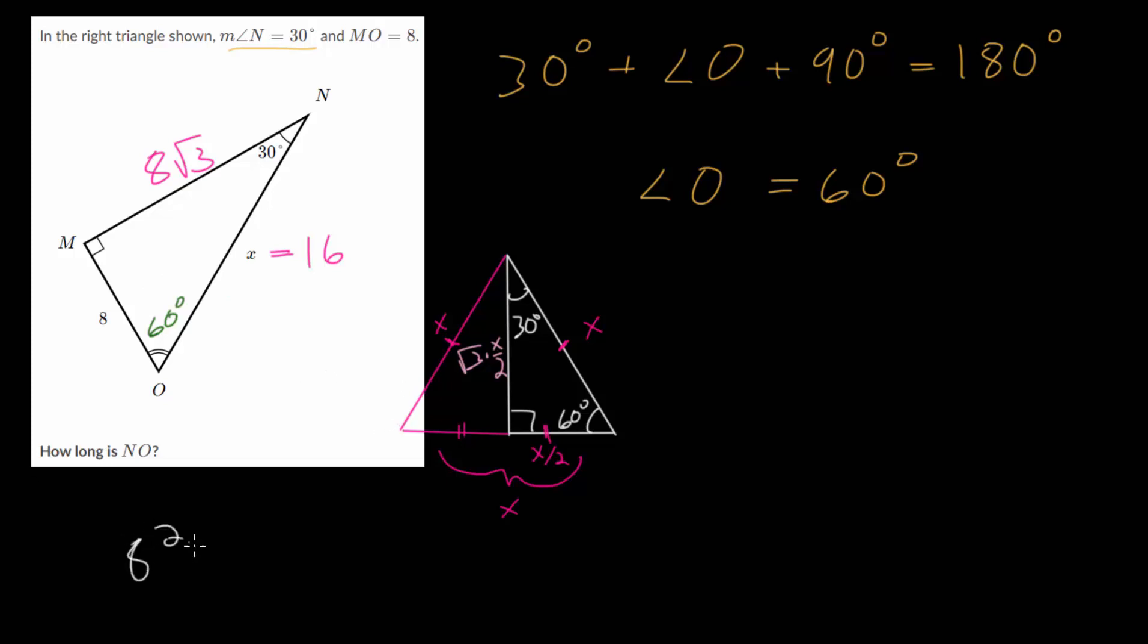And you can check that this makes sense by using the Pythagorean theorem. So you can say that 8 squared plus 8 root 3 squared is equal to 16 squared. And just simplify to make sure this makes sense. Since 8 squared is just 64, if we're squaring this, we're multiplying it by itself. So 8 root 3 times 8 root 3. So we get 64 times the square root of 3 times by the square root of 3, which we can just make the square root of 3 times 3, or root 9.